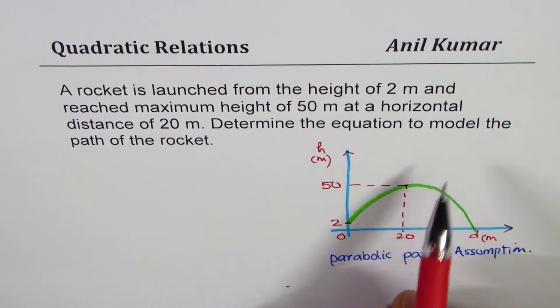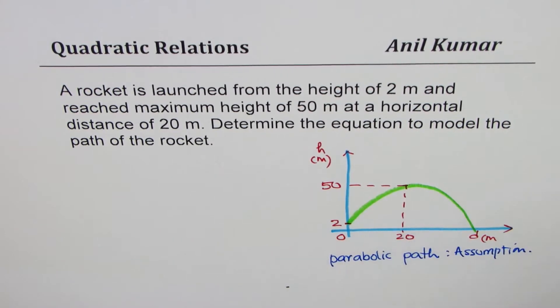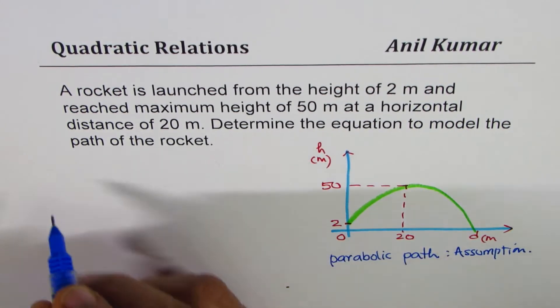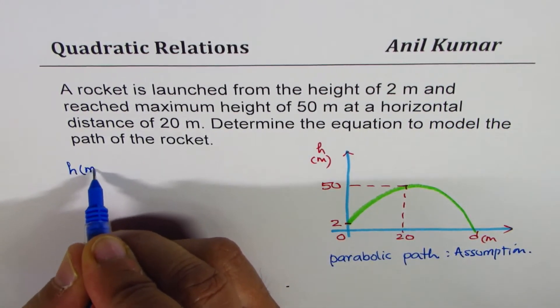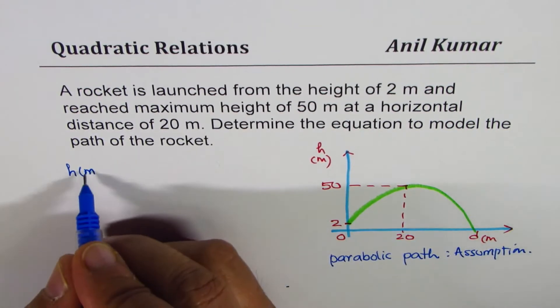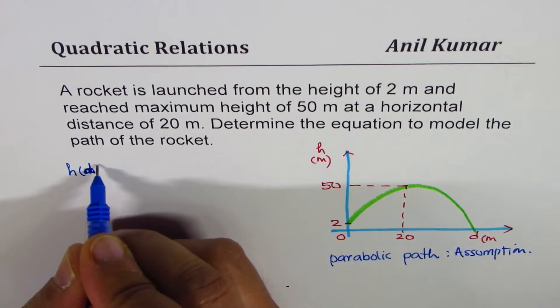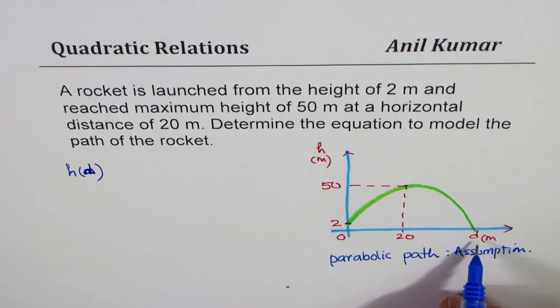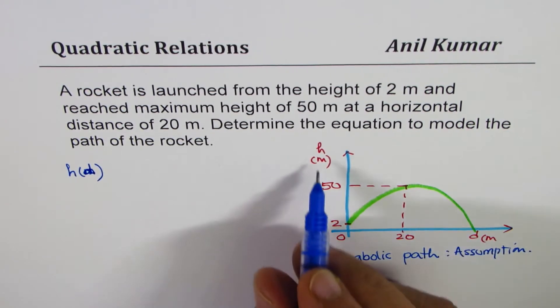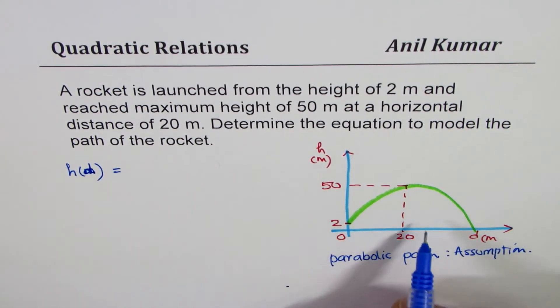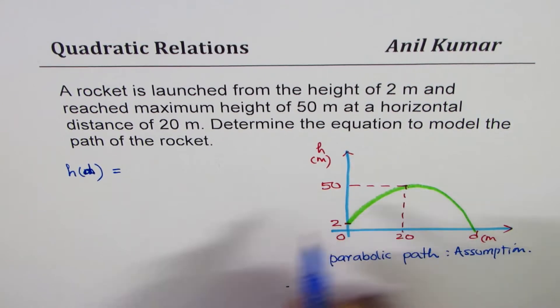Now, we have to determine the equation to model this situation. We can say that height of the rocket—let me write D here—what distance D? D is my variable, independent, and dependent is H. We will use the vertex form.